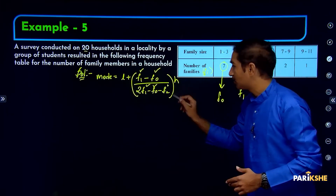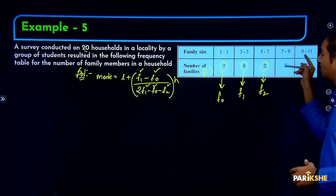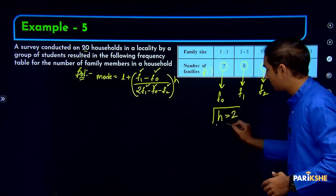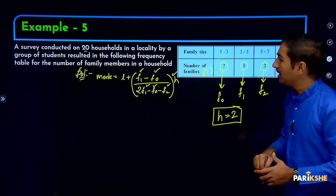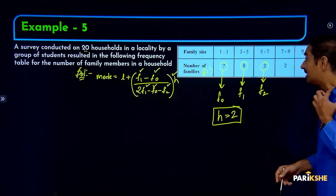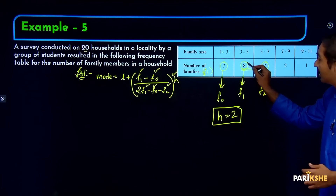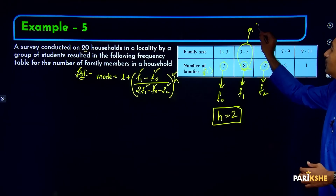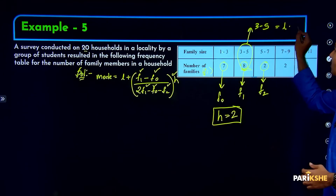F2 is also identified. For H, the difference is 2, so H = 2. Now we need L — the lower limit of the modal class. The modal frequency is 8, corresponding to the class 3 to 5. The lower limit is 3, so L = 3. All values are now identified: L=3, F1=8, F0=7, F2=2, H=2.